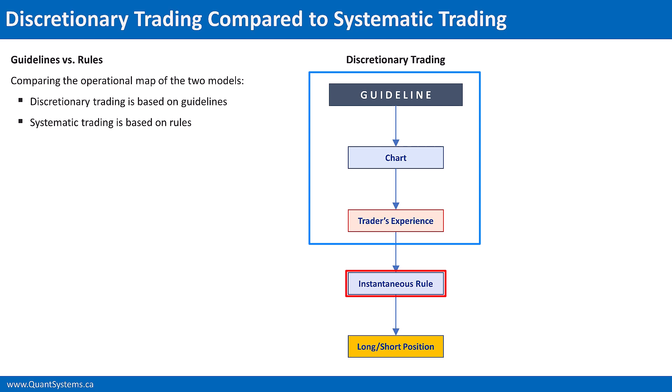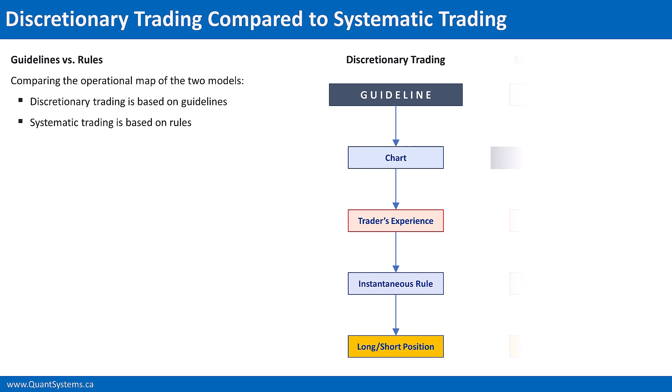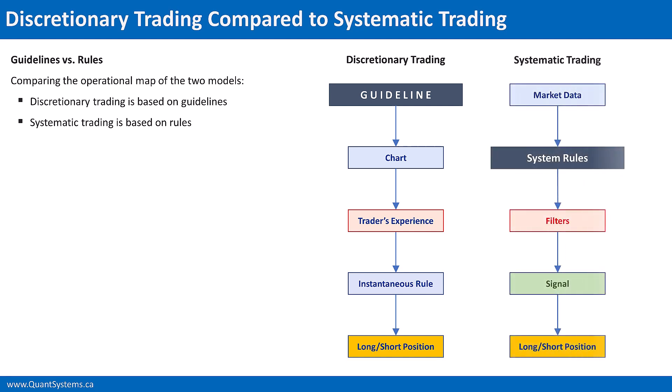So there is a lot of information missing from this guideline. Therefore, the trader has to bring in his experience to further tune this guideline with respect to the chart in front of him — the bars he's looking at right now — to generate an instantaneous trading rule that applies to that specific moment in time on that chart. And that trading rule allows the trader to take that trade, but it does not apply to future trades. If you compare that with the systematic trading model, you will see that there are major differences.